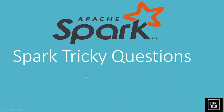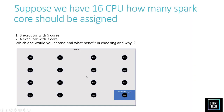Hello everyone, welcome to Start Tech. In today's video we are going to discuss some of the Spark tricky interview questions. So let us begin. Today's first question is: suppose we have 16 CPUs, how many executors should we have with the cores? Should we have three executors with five cores or four executors with three cores, given that we have 16 CPUs?